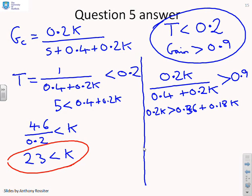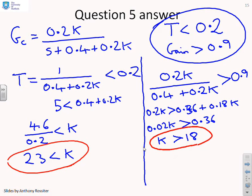And if I move the k's to the same side, 0.02 k greater than 0.36. Or finally, k greater than 18. So in order to meet the gain requirement, I need k to be bigger than 18.